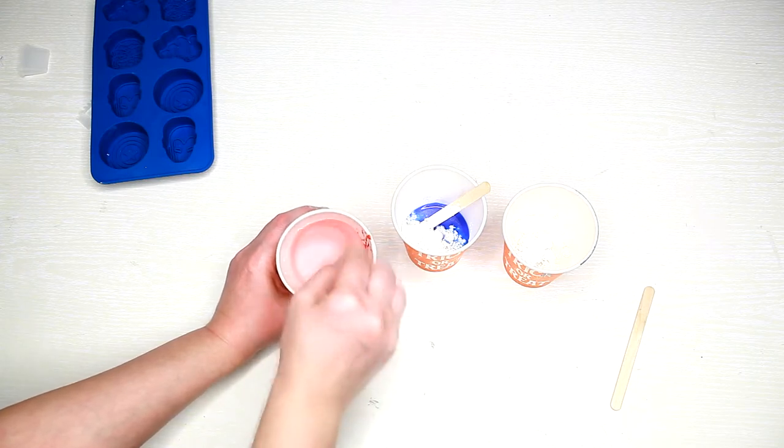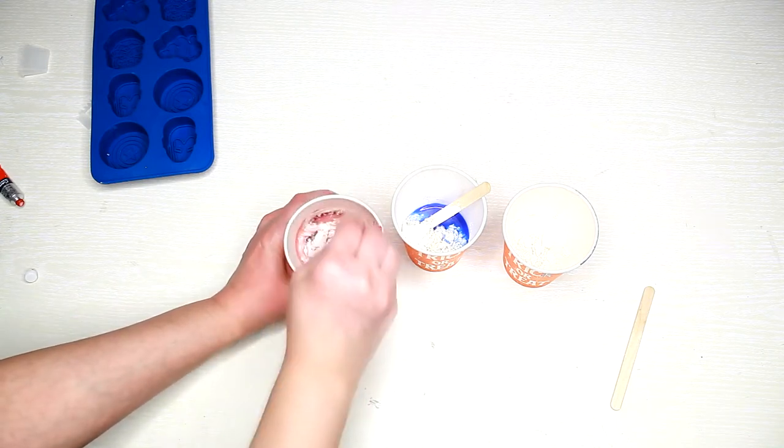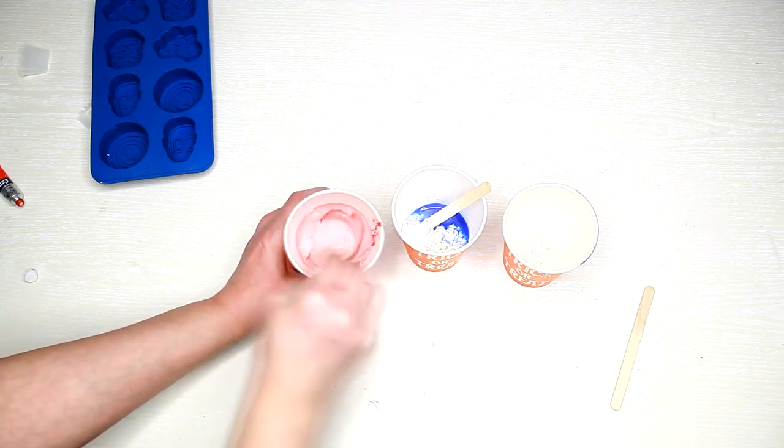After that I decided I should add another tablespoon, so in total I added five tablespoons of plaster in each cup.